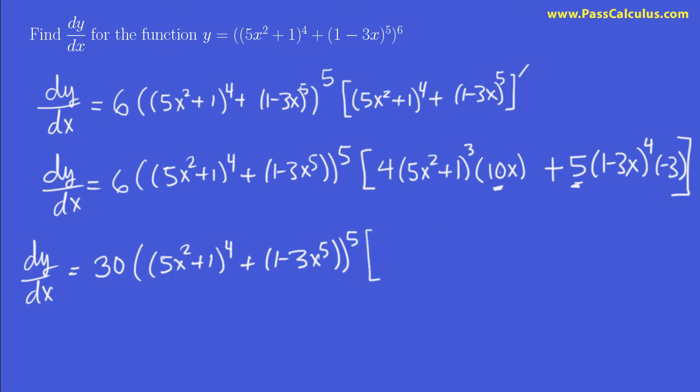But anyways we factor out a 5 here so there's a 2 left here, right, 2 times 4 is 8, 8x. And then we have 5x squared plus 1 cubed and minus 3, 1 minus 3x to the 4. And that's as far as I want to take this.